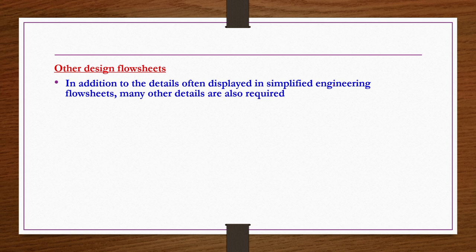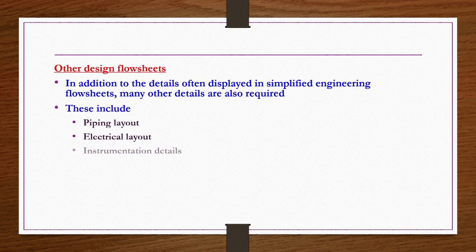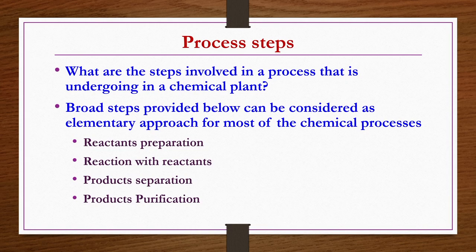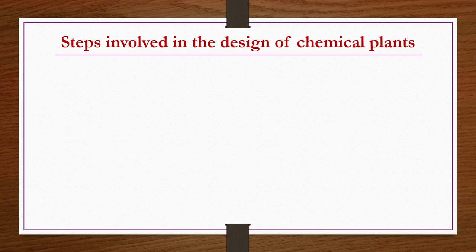Other design flow sheets: in addition to the details displayed in simplified engineering flow sheets, many other details are also required. These include piping layout, electrical layout, and instrumentation details, which are separately provided. Plant layout is also required. All such intricate and detailed flow sheets are necessary for every chemical plant layout, both from the safety and operational ease point of view. Now, after discussing flow sheets, we discuss process steps. What are the steps involved in a process undergoing in a chemical plant? Broad steps considered as an elementary approach for most chemical processes include: reactants preparation, reactions with reactants, and separation and purification of products.